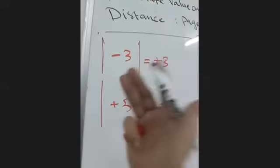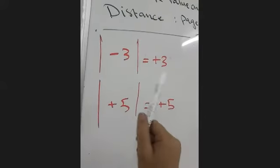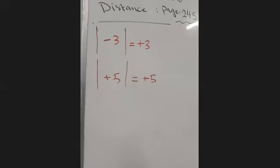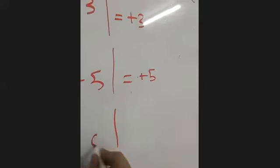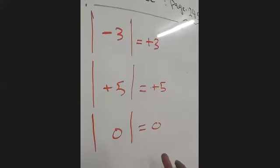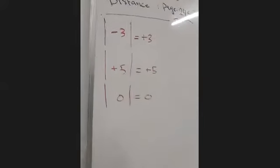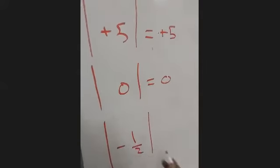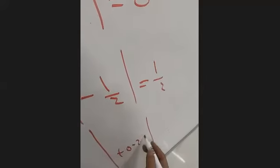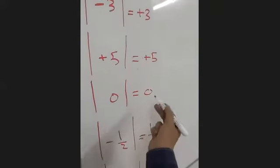The absolute value of both negative and positive numbers always gives positive values, because it represents distance. The absolute value of negative three is the distance from negative three to zero on the number line — and distance cannot be negative. The absolute value of zero is zero, since zero is neither positive nor negative. Otherwise, the result is always positive. For example, the absolute value of negative one-half equals positive one-half, and the absolute value of 0.25 is 0.25.